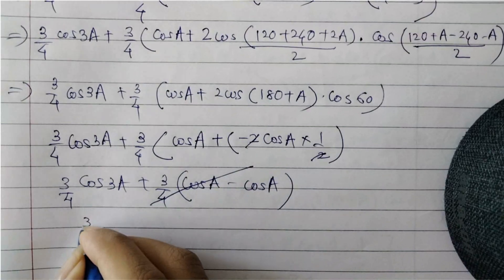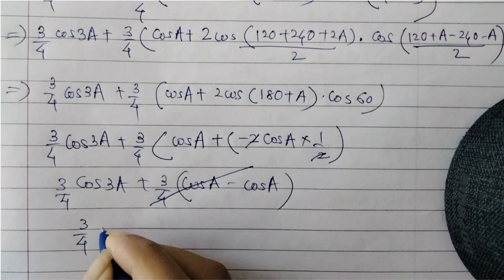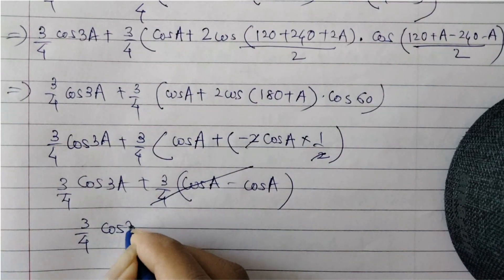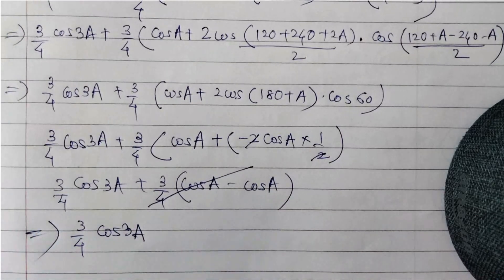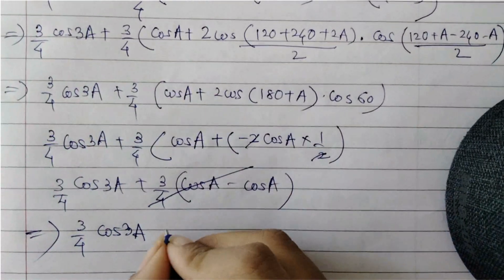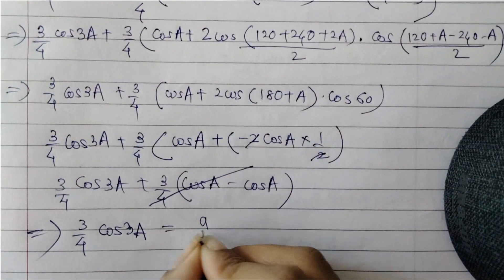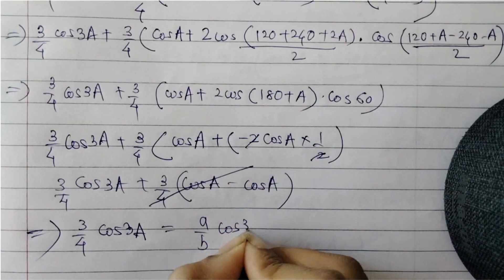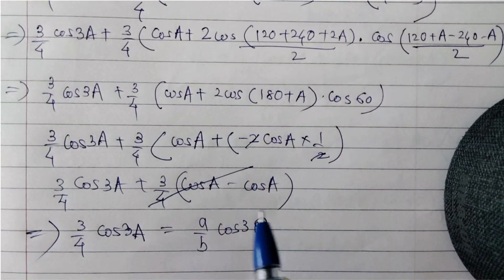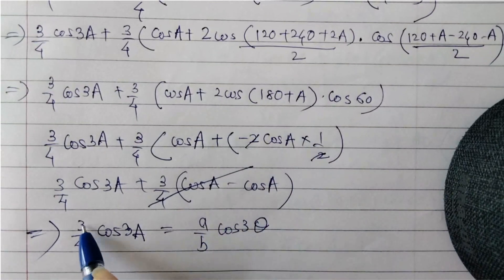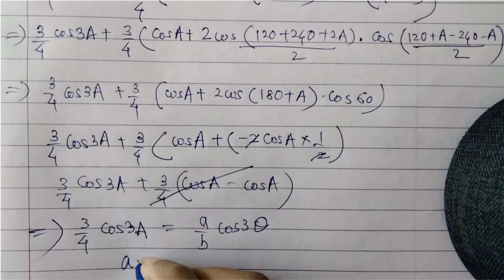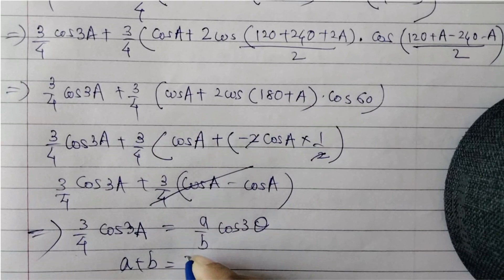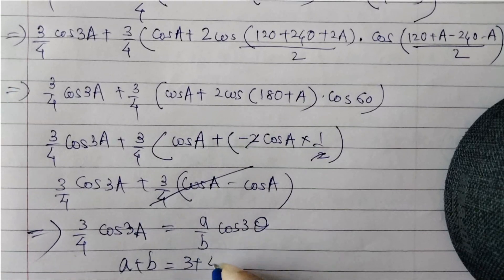So finally we are left with (3/4)cos3A. Comparing with the RHS, which is (a/b)cos3θ, it is evident that a = 3 and b = 4. Therefore a + b = 3 + 4 = 7.